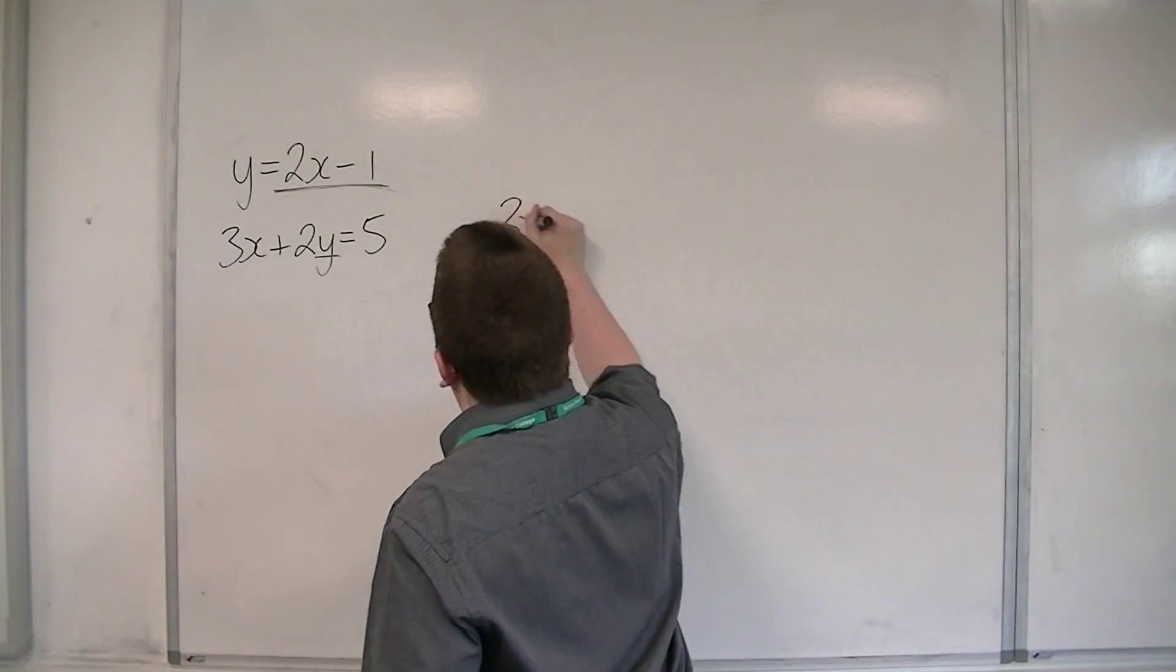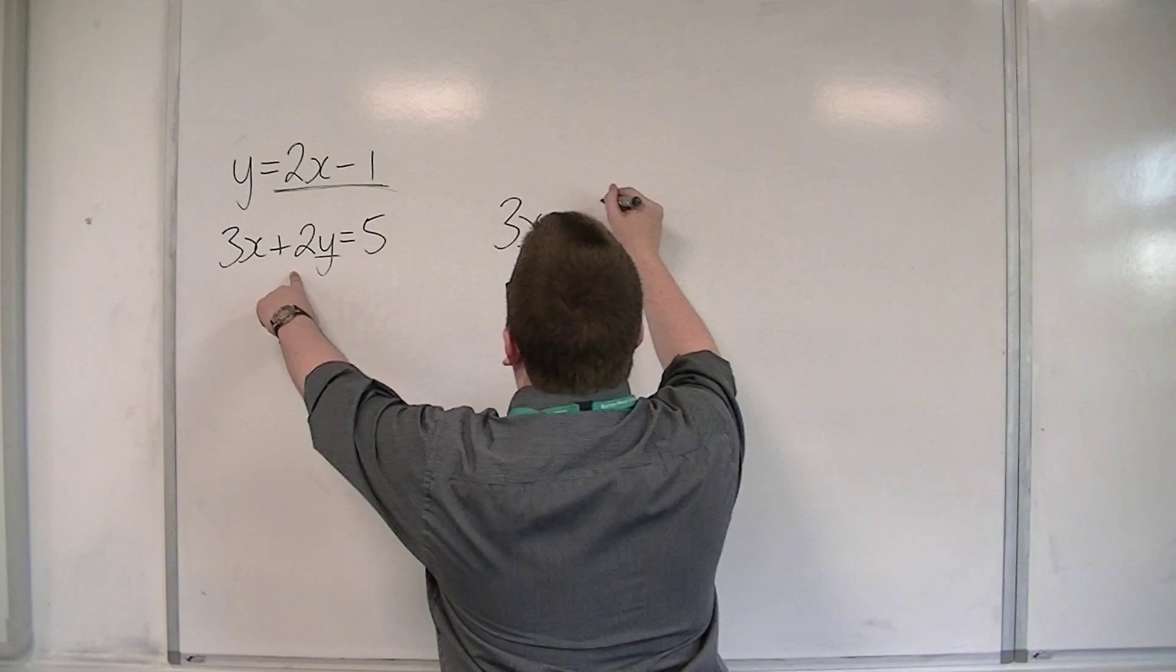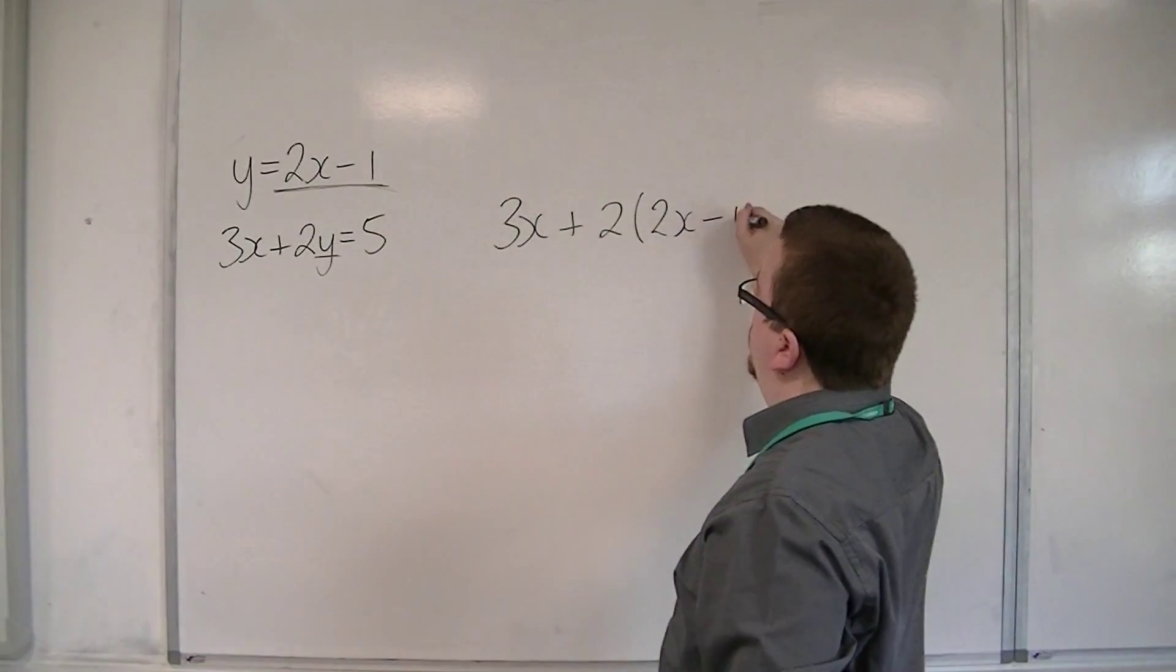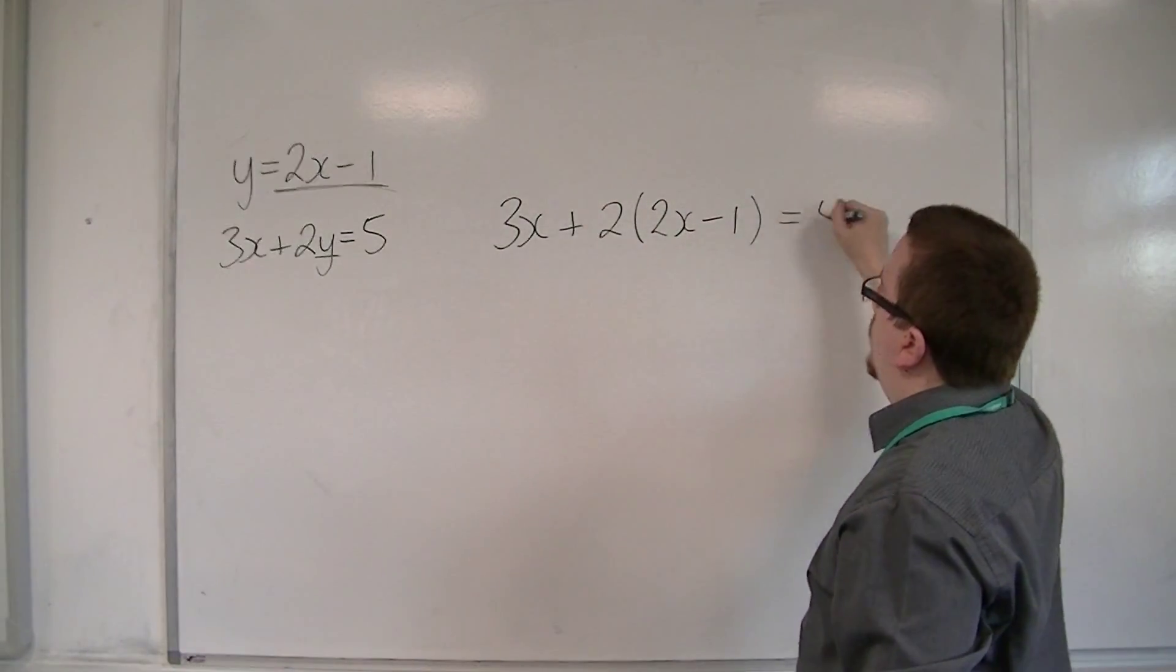So we have 3x plus 2 lots of y, so 2 lots of the 2x minus 1, and that's going to be equal to 5.